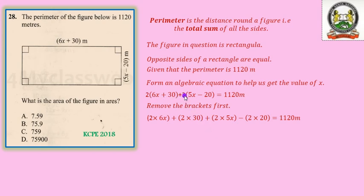And then we shall subtract 2 multiplied by 20, and everything will give us 1120 meters because that will be the perimeter for that figure. Once we simplify that expression, we shall have 12x plus 60 plus 10x minus 40.